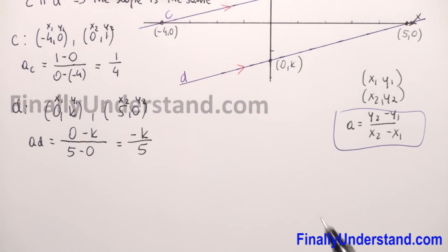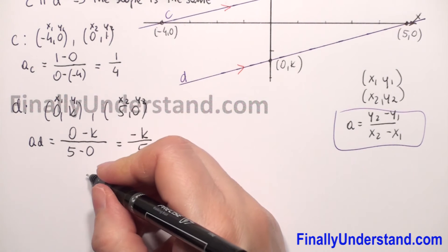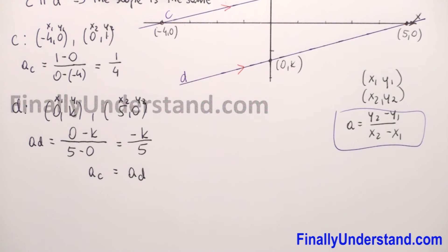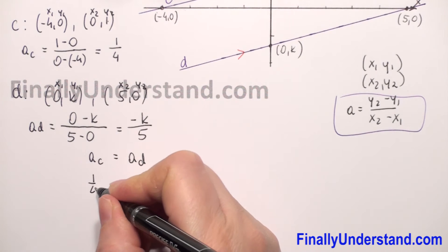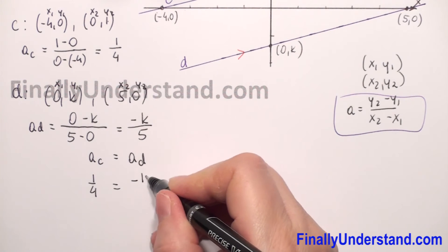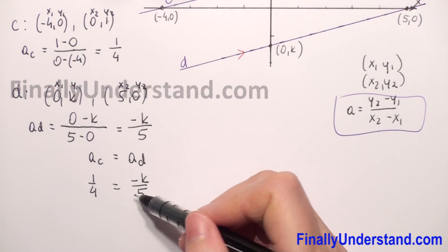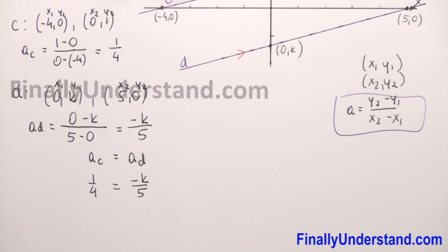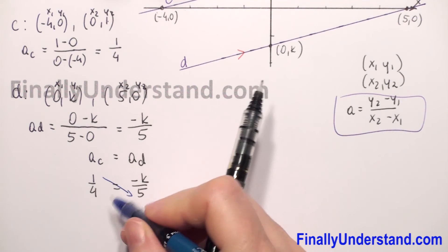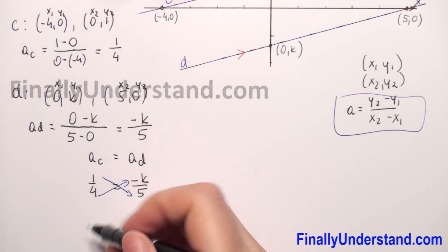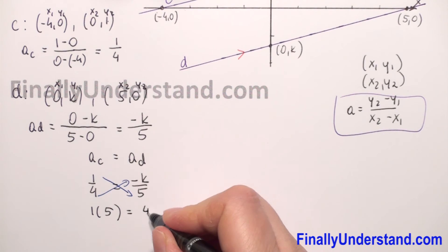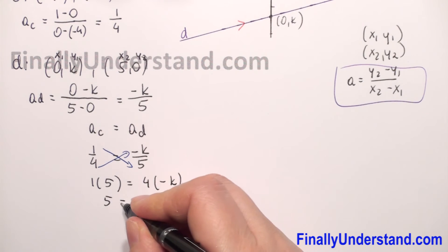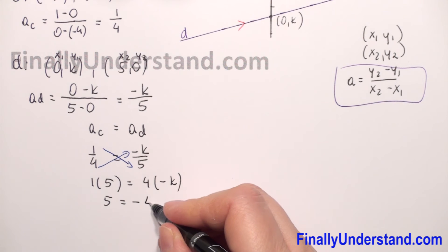Because these two lines are parallel, the slope of line C is equal to the slope of line D. We found that slope of line C is 1 over 4 and slope of line D is negative k over 5. We have an equation with one unknown — K is our unknown. We will cross multiply numerator times denominator: 1 times 5 is equal to 4 times negative k.